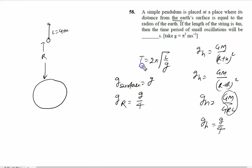Now we will use the time period formula. We write T = 2π√(l/g_h), where l is 4 meters and g_h is g/4. So we can write 2π√(4/(g/4)) = 2π√(16/g). What is the value of g?